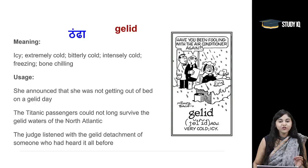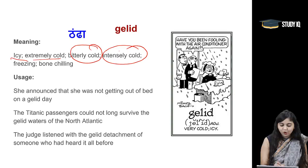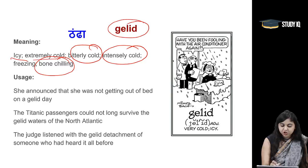Starting with the first word of the day: Gelid. Gelid shabd ka arth hota hai freezing, icy cold. Bohut jab thand par jaati hai, uske liye ham gelid shabd ka prayok karte hai. So: icy, extremely cold, bitterly cold, intensely cold. Bone chilling is a good important synonym of the word gelid. Ya thanda — yeh gelid ke arth hote hai.